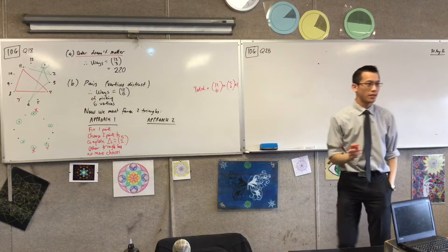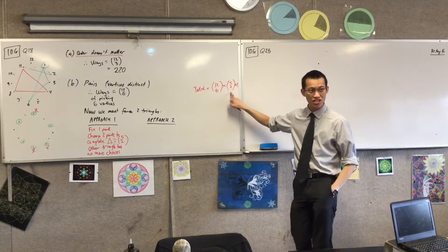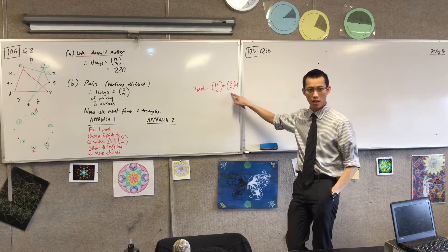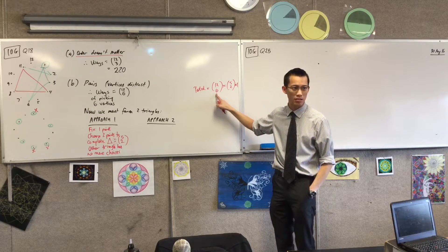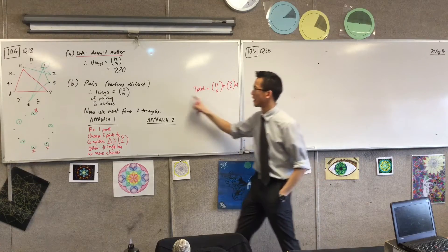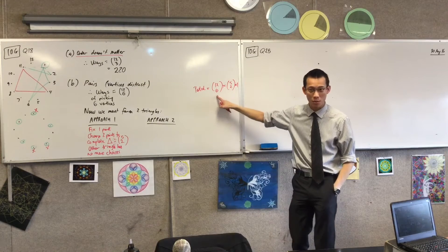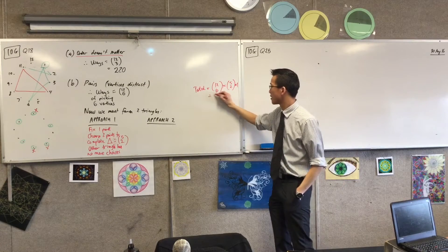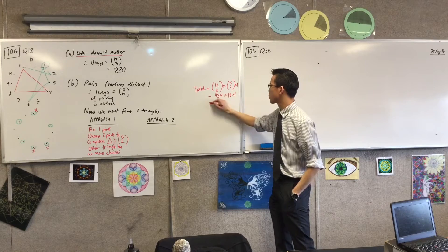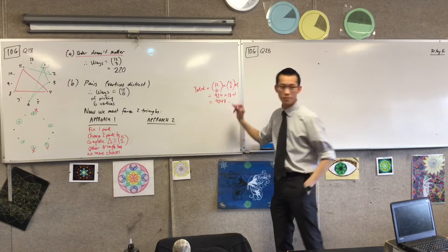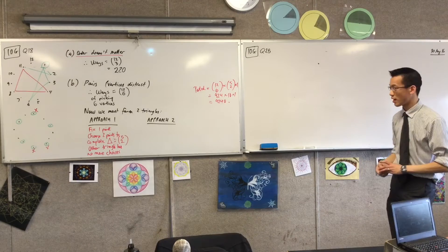In summary: first I pick out my six vertices from the twelve — that's 12 choose 6 — then I choose a triangle, which is 5 choose 2. So the total is 12C6 × 5C2 × 1. 5C2 is 10, and 12C6 is 924, giving 924 × 10 = 9240. That's my answer for method one.